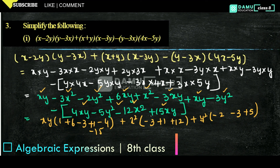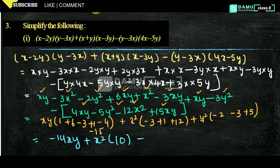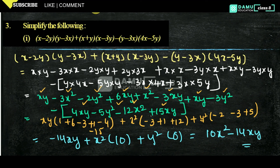So 1 plus 6 is 7, 7 minus 3 is 4, plus 1 will be 5, then minus 4 will be 1, 1 minus 15 will be minus 14, so minus 14xy. Plus x square into 12 plus 1 is 13, 13 minus 3 will become 10. Plus y square into minus 2, minus 3 will become minus 5, minus 5 plus 5 will become 0. Then what you will get is 10x square minus 14xy. So 10x square minus 14xy is the solution.